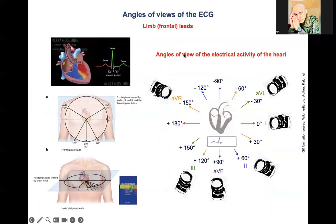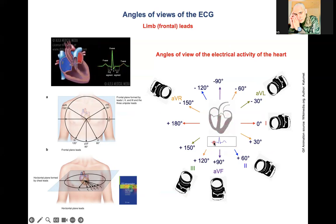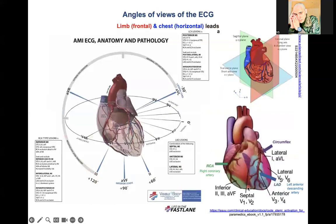Now let's look at the angles of the ECG frontal leads. The cameras represent the 6 exploring electrodes: Lead 1 at 0 degrees, Lead 2 at 60 degrees, Lead 3 at 120 degrees, AVF at 90 degrees, AVR at minus 150, and AVL at minus 30 degrees. If we add the 6 horizontal leads, we can evaluate the electrical activity of the heart in a three-dimensional way.